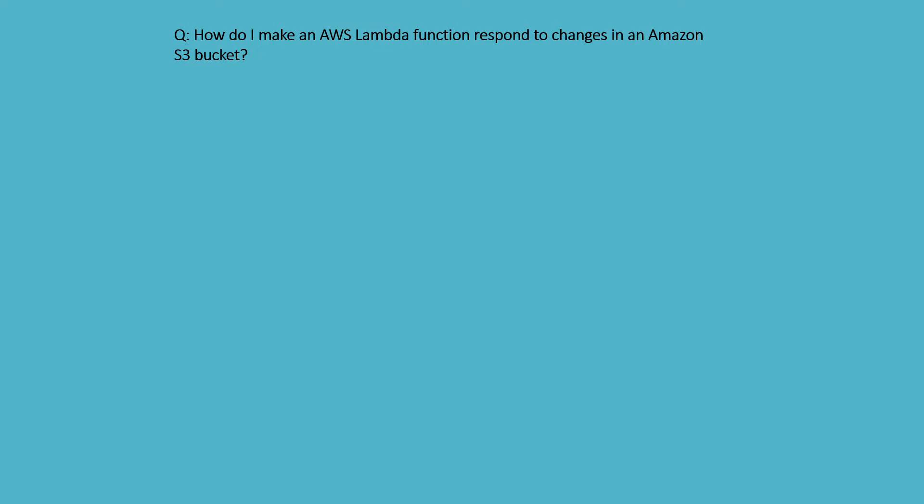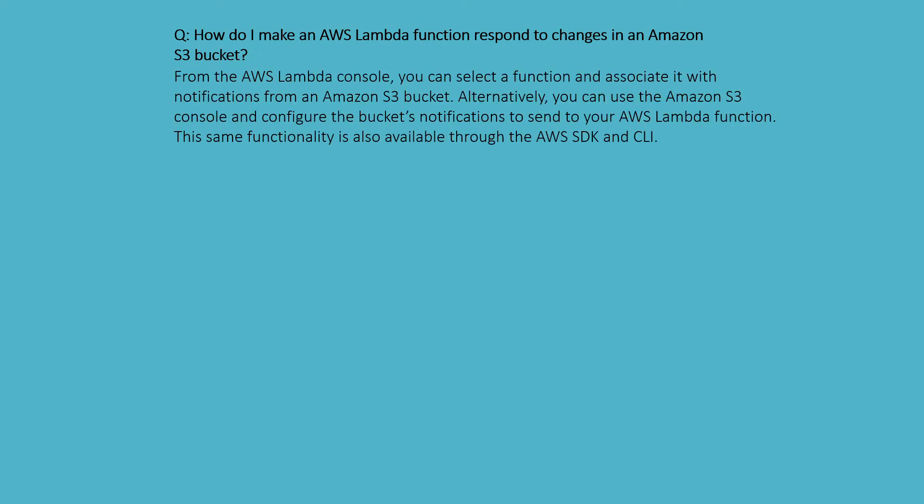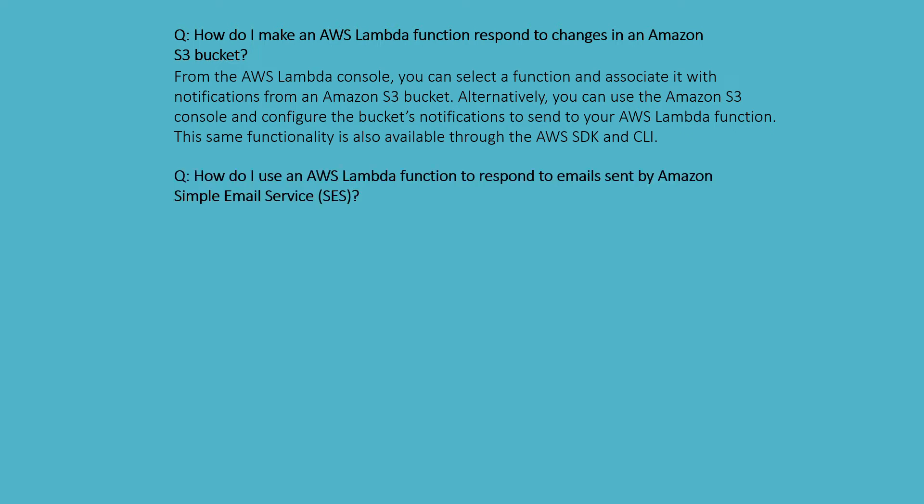How do I make an AWS Lambda function respond to changes in an Amazon S3 bucket? From the AWS Lambda console, you can select the function and associate it with a notification from an Amazon S3 bucket. Alternatively, you can use the S3 console and configure bucket notifications to send to your AWS Lambda function. This same functionality is also available through the AWS SDK and CLI.